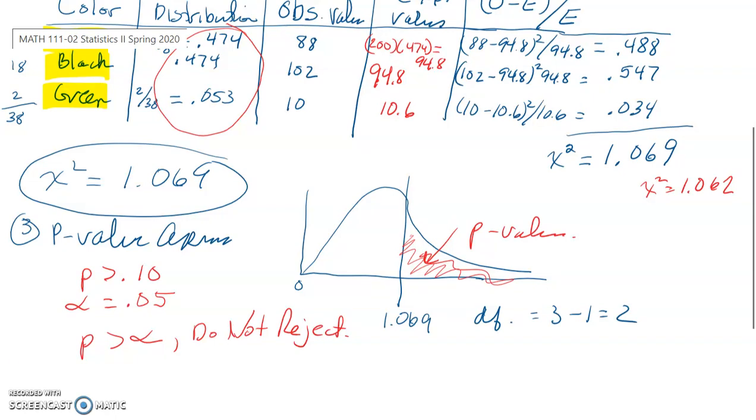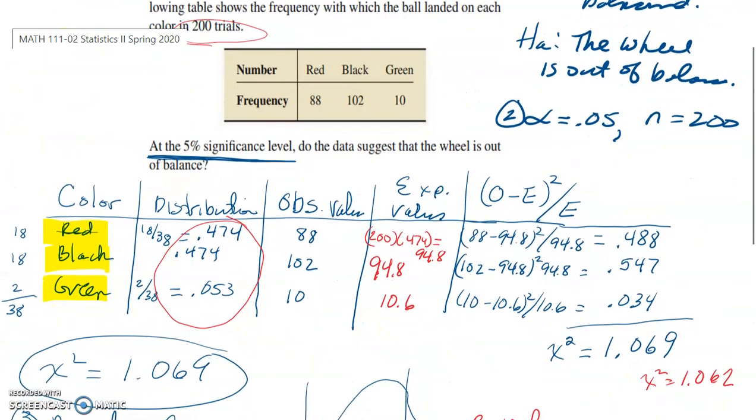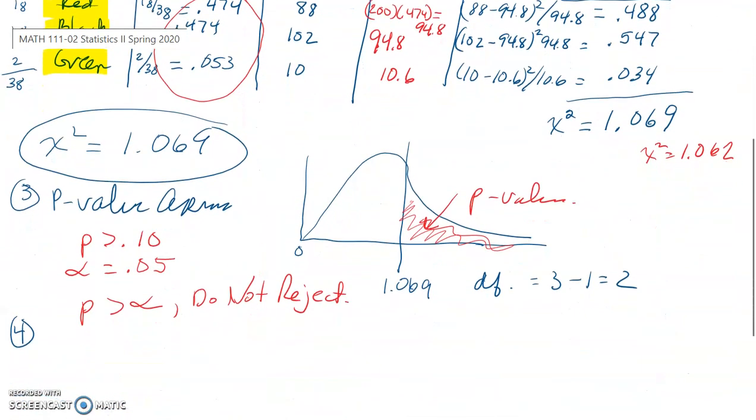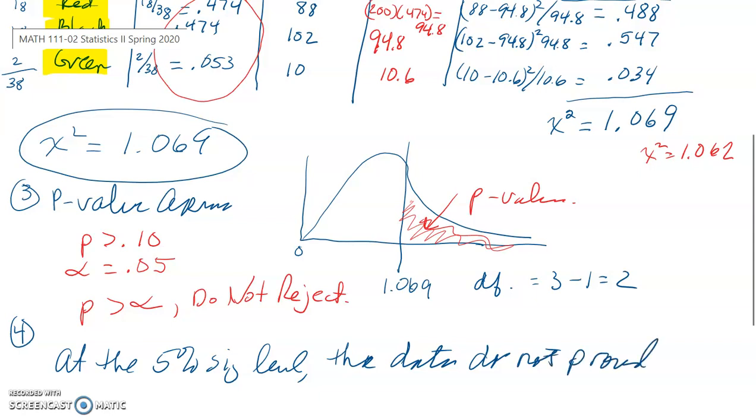And, number four, in conclusion, remember, when we are writing our conclusion, we are restating that question that was being asked. At the 5% significance level, do the data suggest the wheel is out of balance? For number four, we would simply state at the 5% significance level, the data do not provide sufficient evidence that the wheel is out of balance.